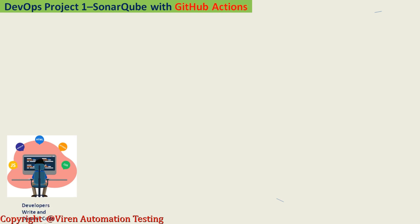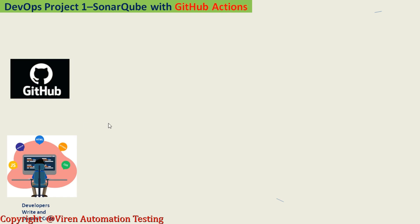Developers write code and commit it. You commit the code on your local system and then push it to a repository. Here I am using GitHub as the repository. GitHub is a source code management tool where we keep all our code in the cloud environment. Developers commit code locally, push it to the GitHub repository, and within that repository they work with different branches.